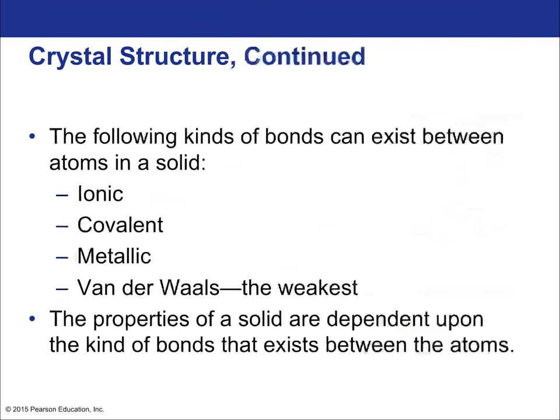The following kinds of bonds can exist between atoms in a solid — this is how they hold together to make that crystalline or amorphous structure. They can have ionic bonds, covalent bonds, metallic bonds, and van der Waals bonds. The properties of a solid are dependent upon the kinds of bonds between the atoms. In terms of strength, from strongest to weakest, they basically go in the order listed.